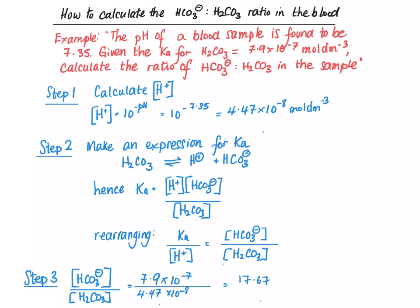So we substitute the numbers in for Ka, which we're told is 7.9 times 10 to the minus 7. We substitute in the value of H+, which we've worked out is 4.47 times 10 to the minus 8, this number here. When you put those numbers into the calculator, you get 17.67. So the ratio of HCO3- to H2CO3 is 17.67 to 1.